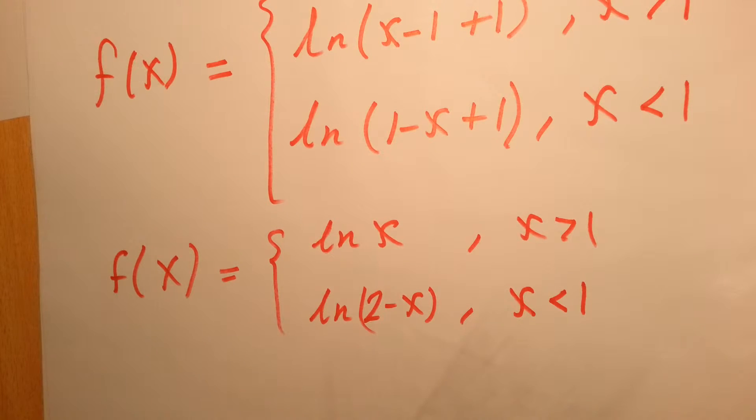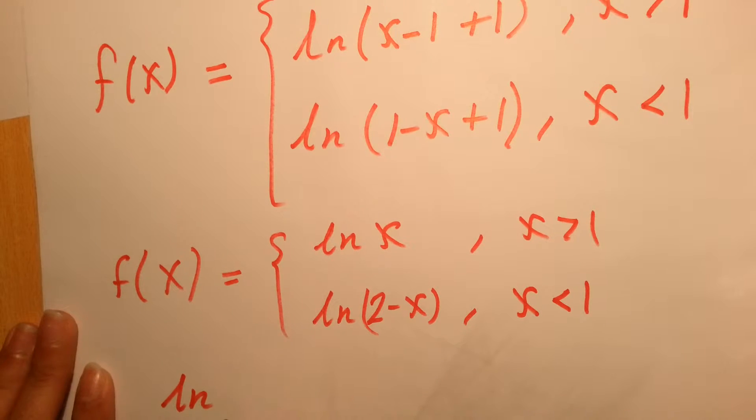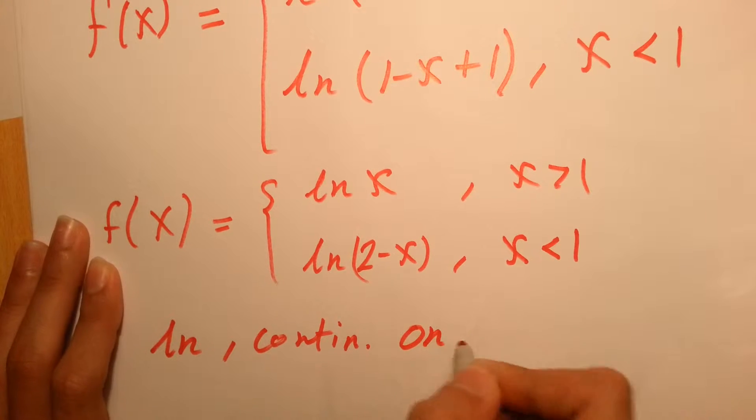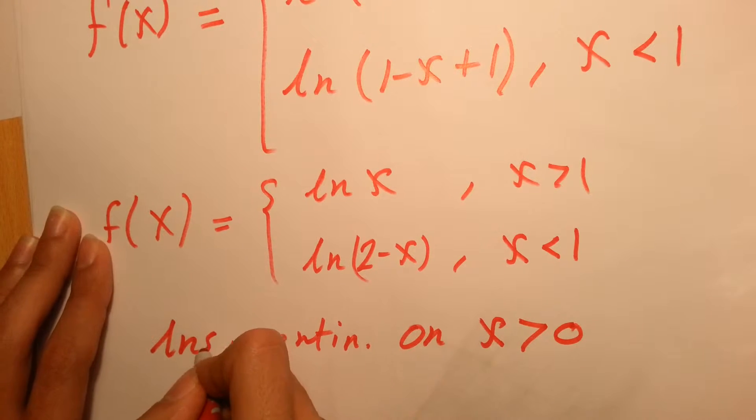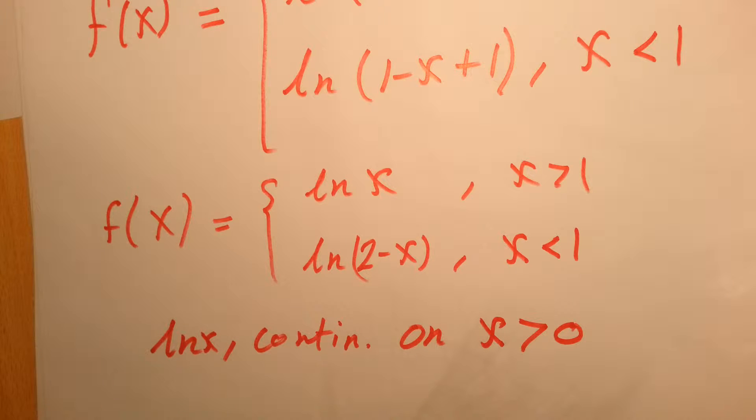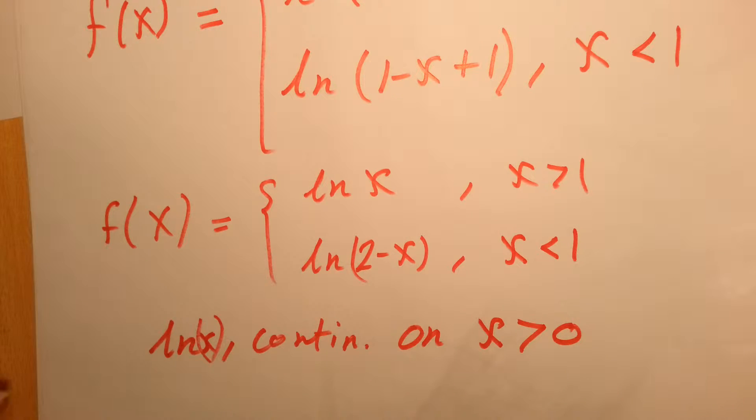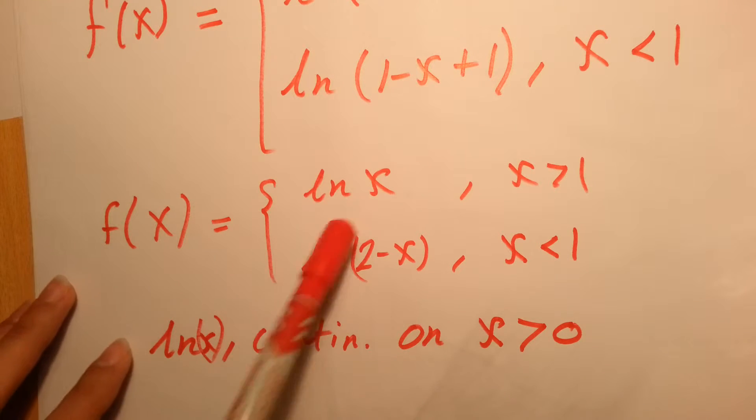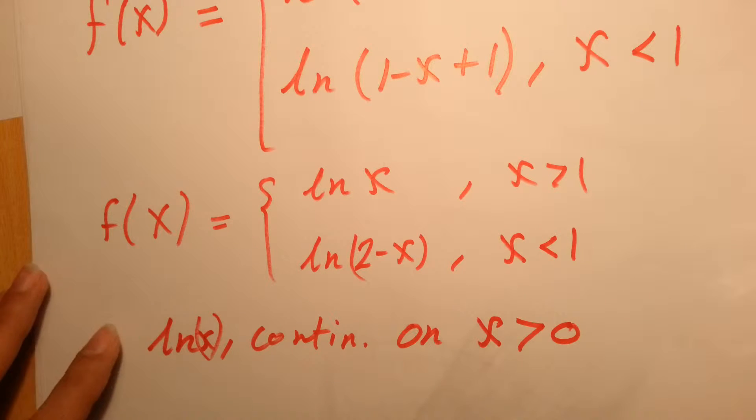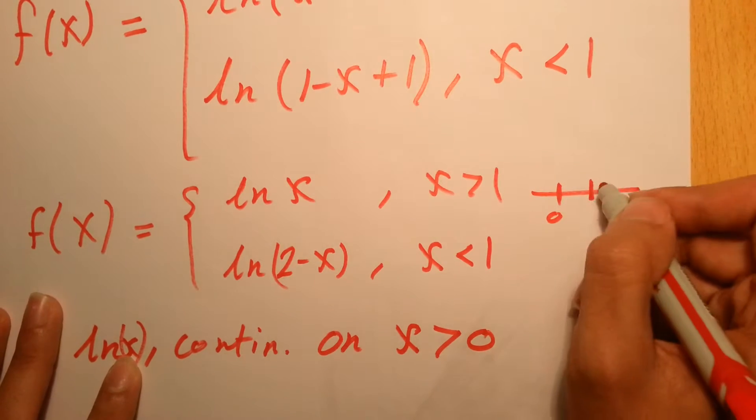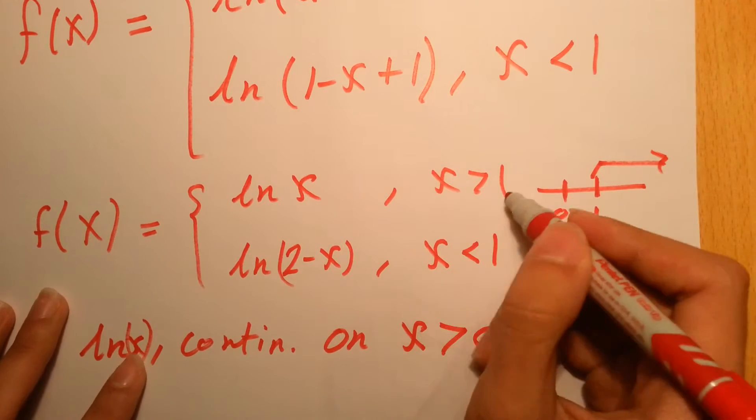So in order for us to check the continuity for the ln functions, we know that any ln is continuous on x greater than 0. For the first part, this ln x must be greater than 0, and if we check our period it starts from 1. So it must be greater than 0, but anyway we're starting our function from 1 to infinity, so this part is continuous all the time.